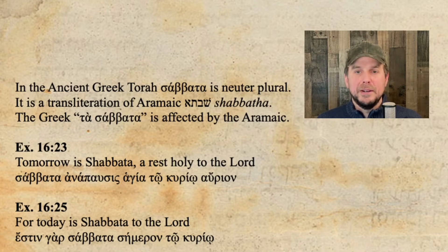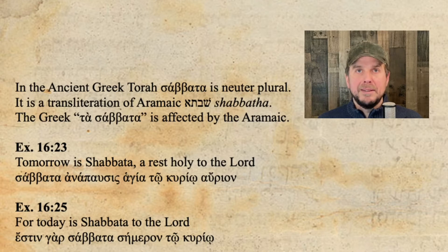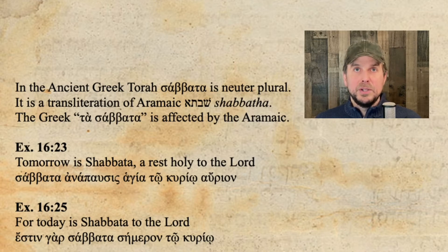The first point is to look at the transliteration. There is no Greek word Sabbath — this is a Hebrew word, Shabbat, coming from Jewish culture into the Greek language. In the Greek Torah, the word Shabbat was not translated but rather transliterated. However, we need to clarify that it was transliterated not from Hebrew into Greek, but from Aramaic into Greek.